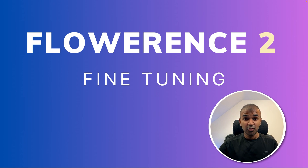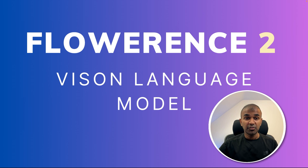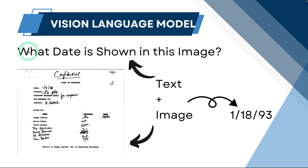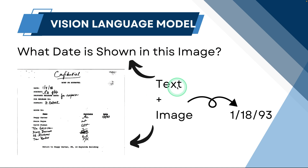Now we are going to see about Florence 2 fine-tuning. Florence 2 is a vision language model released by Microsoft where you are able to ask questions — for example, what date is shown in this image — and provide both text and image together to get the answer.